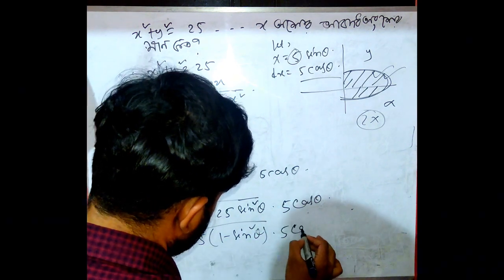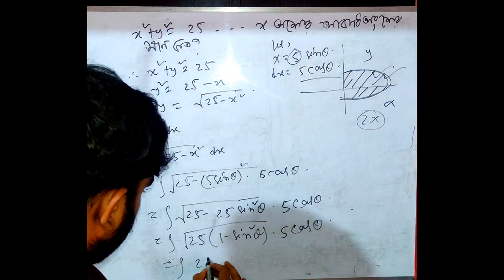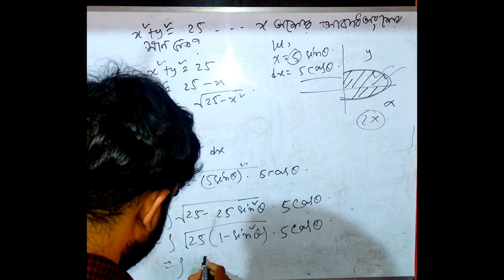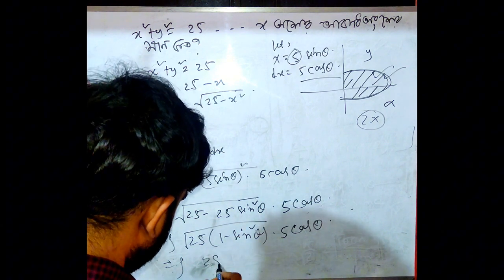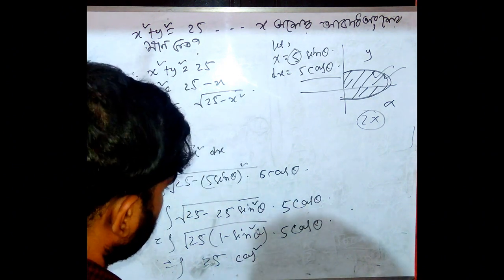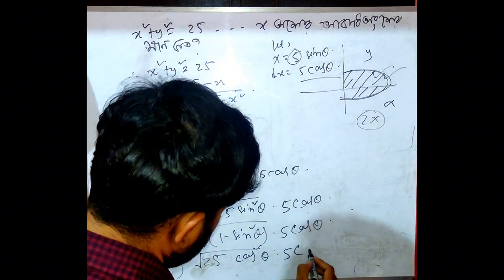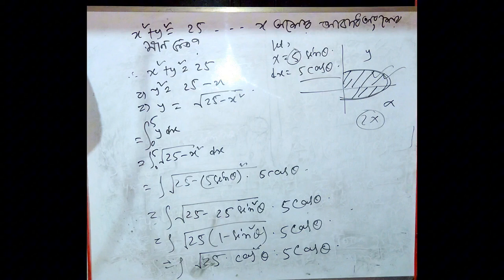Integration. 25. 1 minus sine square theta. 25, 5 sine squared theta, 5 minus square theta. So I will write down as 5 cosine theta. To put a carbon a problem.